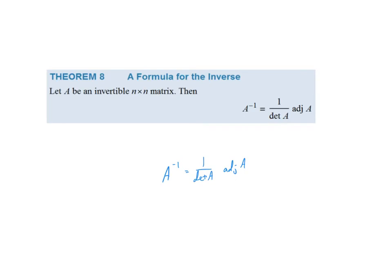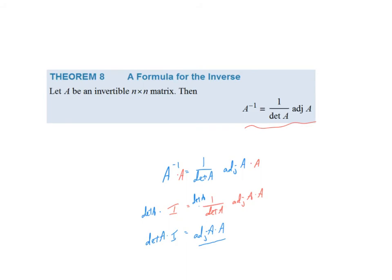Going back to the inverse formula and multiplying both sides on the right by A: A inverse times A gives the identity, which equals one over the determinant of A times the adjugate of A times A. Multiplying by the determinant of A on the left, we get that the determinant of A times the identity equals the adjugate of A times A. So it was quicker and more efficient to multiply the adjugate times A, and that produces the identity with the determinant along its diagonal.